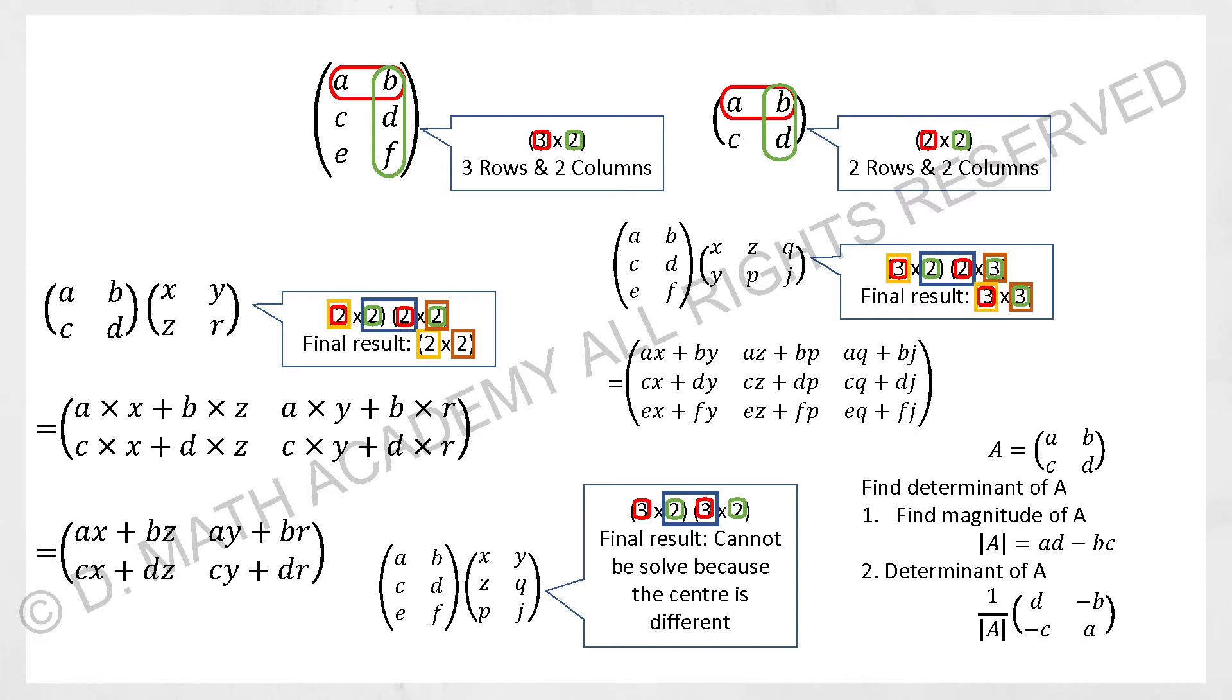Whereby for the next one, we have two rows, two columns. The two rows will be A, B and then we have two columns which is A, C and B, D.